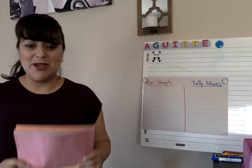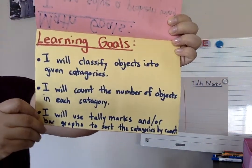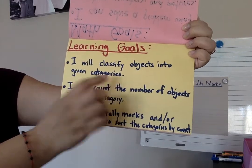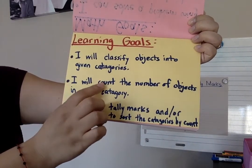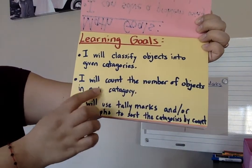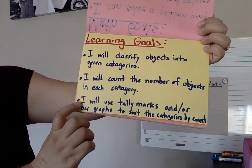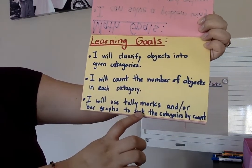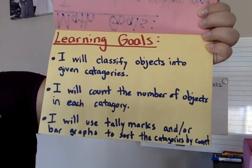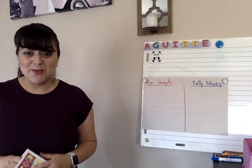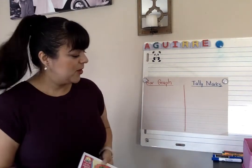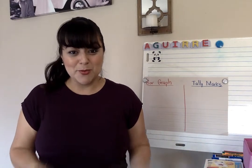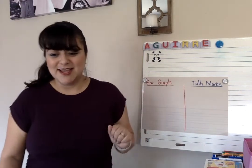Let's start with our learning goals. For today: I will classify objects into given categories, I will count the number of objects in each category, and I will use tally marks and/or bar graphs to sort the categories by count. Now that we know our learning goals, we're going to watch that movie on BrainPop that tells us all about bar graphs and tally marks.